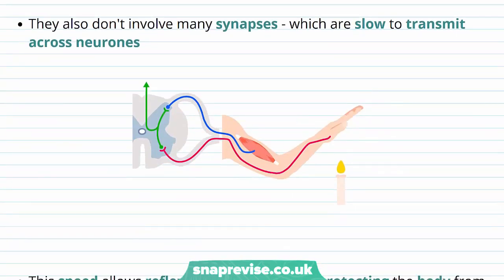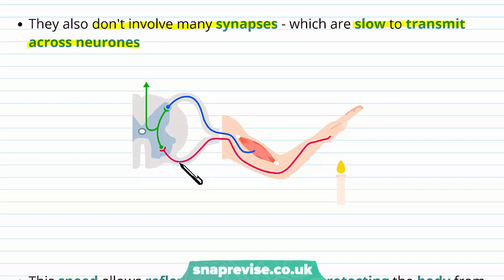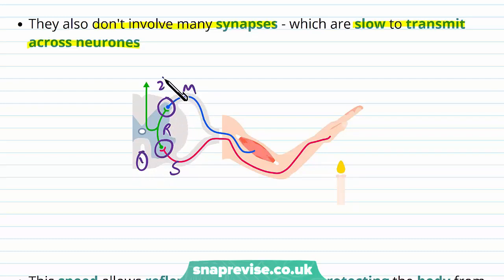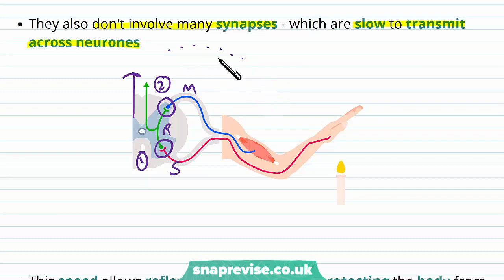Not only are reflexes localised, but they don't involve many synapses. Synapses slow down the transmission of an impulse across neurons, so having fewer synapses is an advantage. We've only got the synapse between the sensory and the relay neuron — that's number one — and the synapse between the relay and the motor neuron — that's number two. As opposed to going all the way up to the brain, where there would be various different synapses along the route, which would slow the process down.